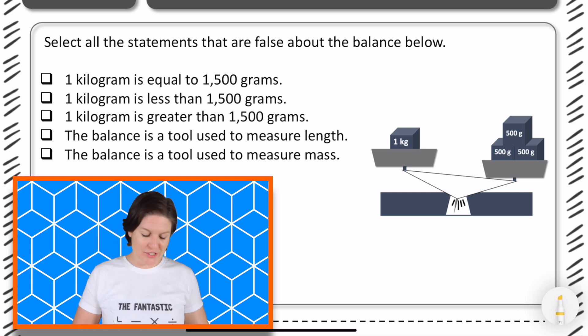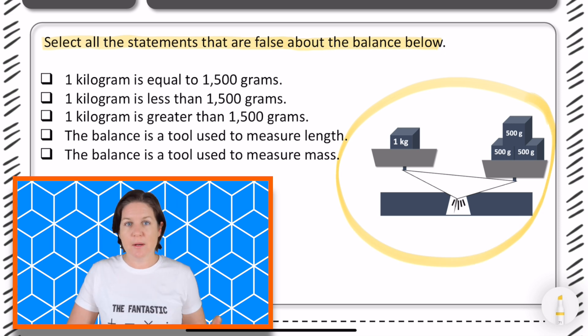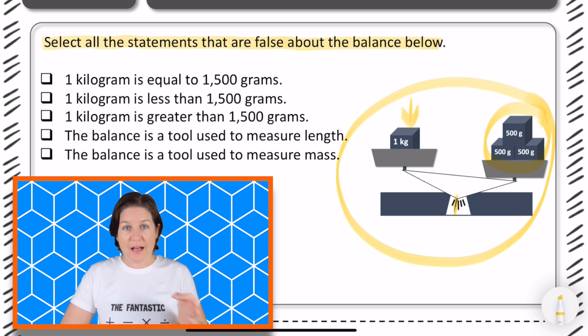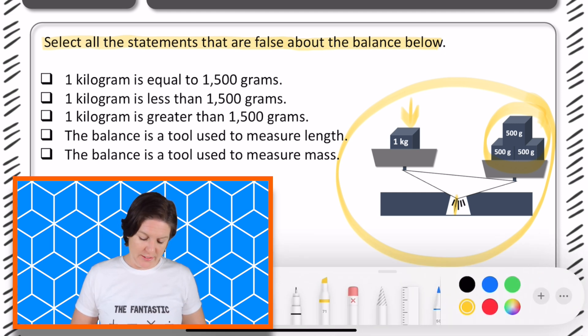Welcome back, fourth grade. Let's go ahead and check it out. This one says, select all the statements that are false about the balance below. So, this is where our balance is right here. And let's make some observations before we even get started. I noticed that we have one kilogram on this side. One kg stands for one kilogram block. And then, over here, we have three 500 grams. And you can see here that this little marker is showing that the heavier side is actually being pushed down on the other side. So, the three 500 grams, that means that it's heavier than the other one. So, we can tell by this that the three 500 grams contains more mass than the one kilogram block that we have there.